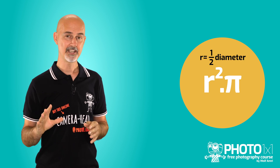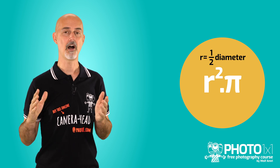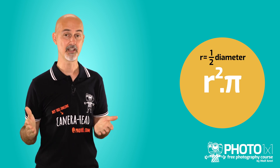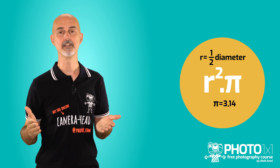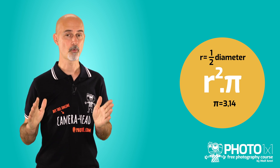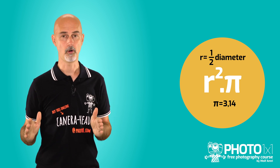And the area is more or less a circle. From school we know that we can calculate the area of a circle. The formula is radius squared times π. The radius is half the diameter that we already know, and π is a constant, roughly 3.14.